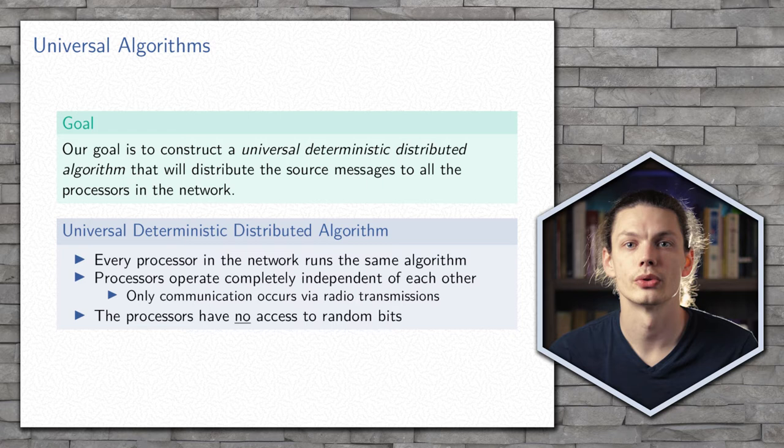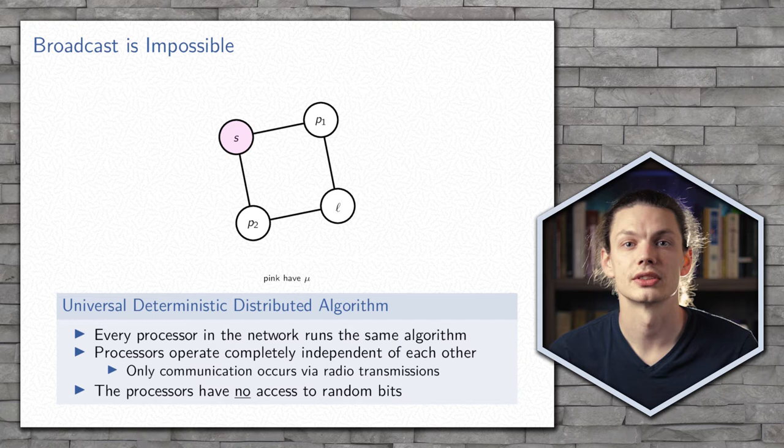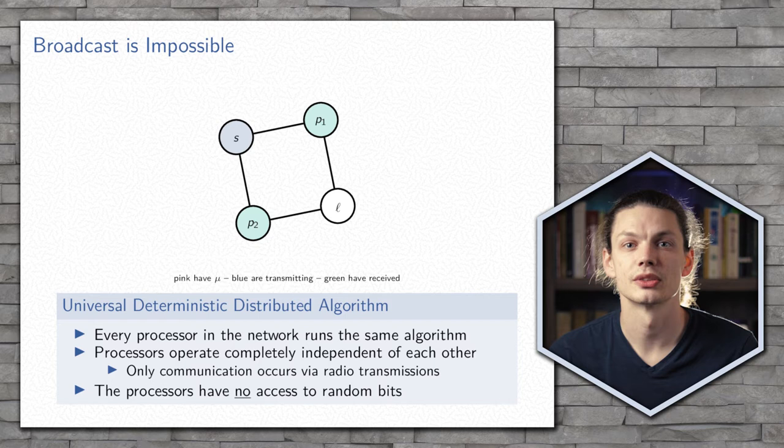These requirements are quite restrictive, and in the next example, we'll show that broadcasting in a radio network is impossible. Here we have the four-cycle graph, with one source node containing a message.